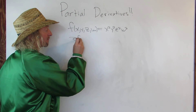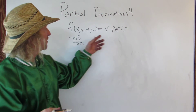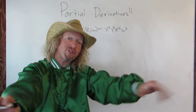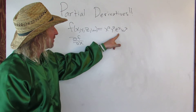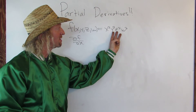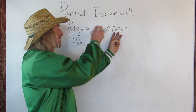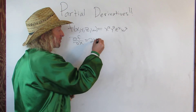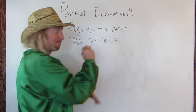Let's do del f del x. We're taking the partial derivative of this with respect to x. This means all of the other variables are constants — y squared, z squared, and w squared are all constants. So we just take the derivative of x squared and get 2x, and the rest just hangs out: y squared, z squared, w squared.